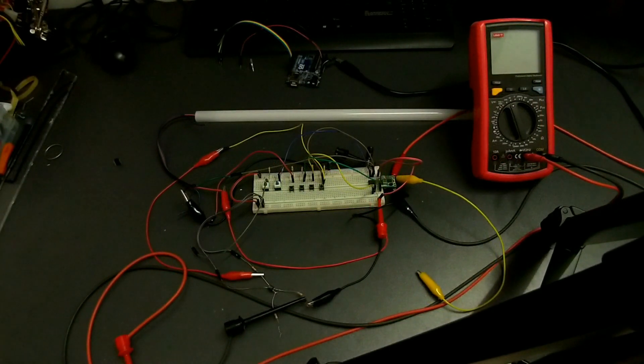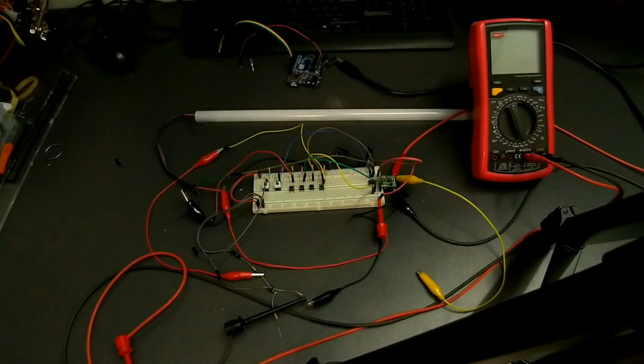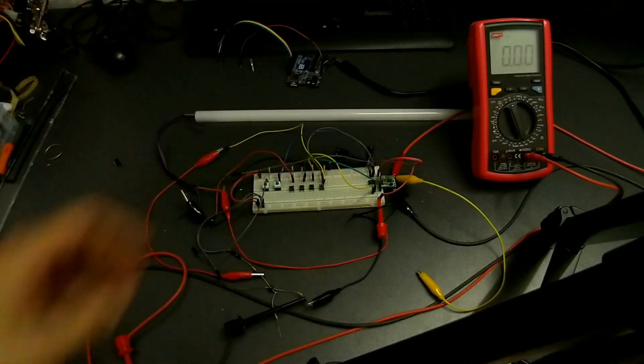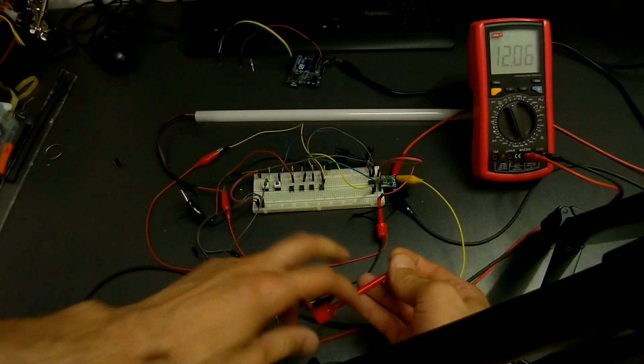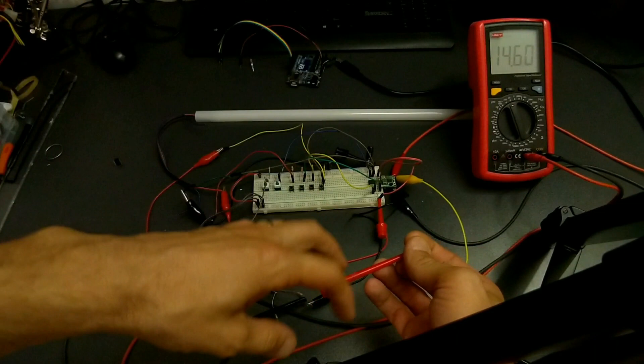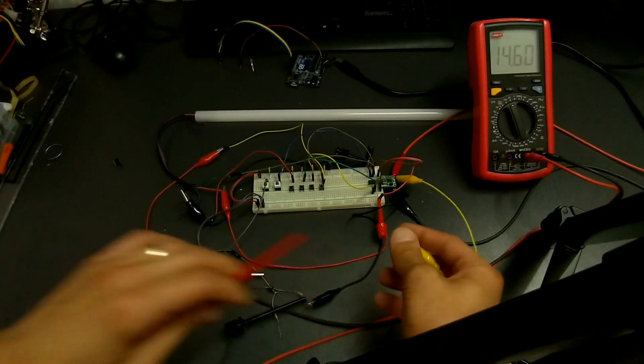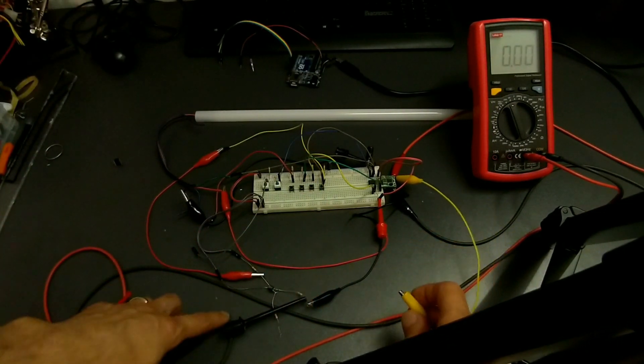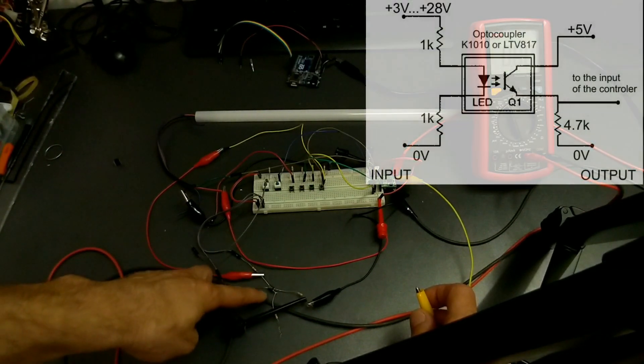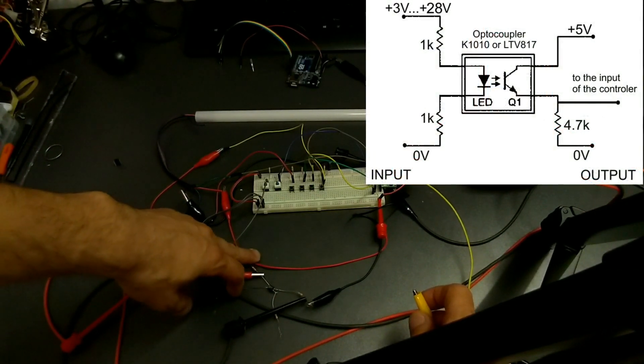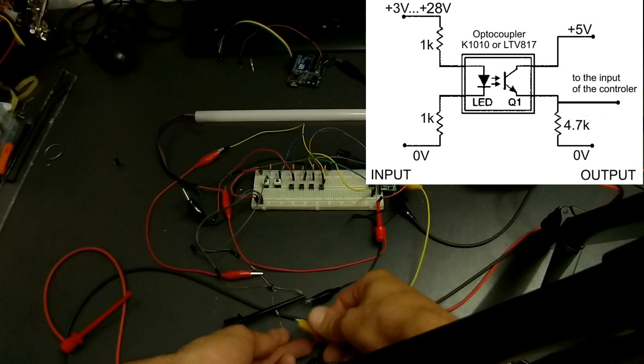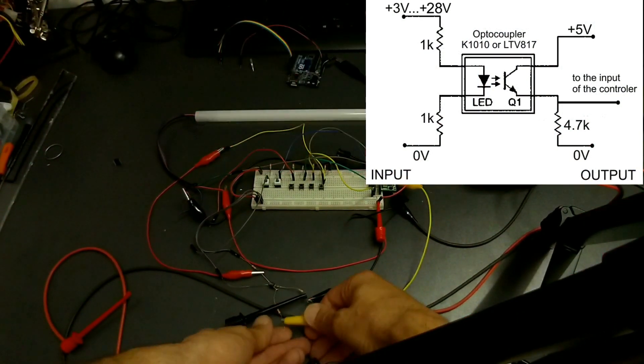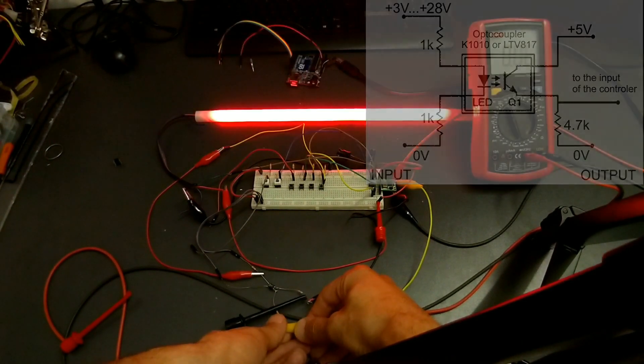In the first take I forgot to mention that this entire project is powered from 14.6 volts. And the simplest way to control the input is by using an optocoupler. This is the 5 volt side of the optocoupler. This is the 14 volt side. And we can control it with no problem.